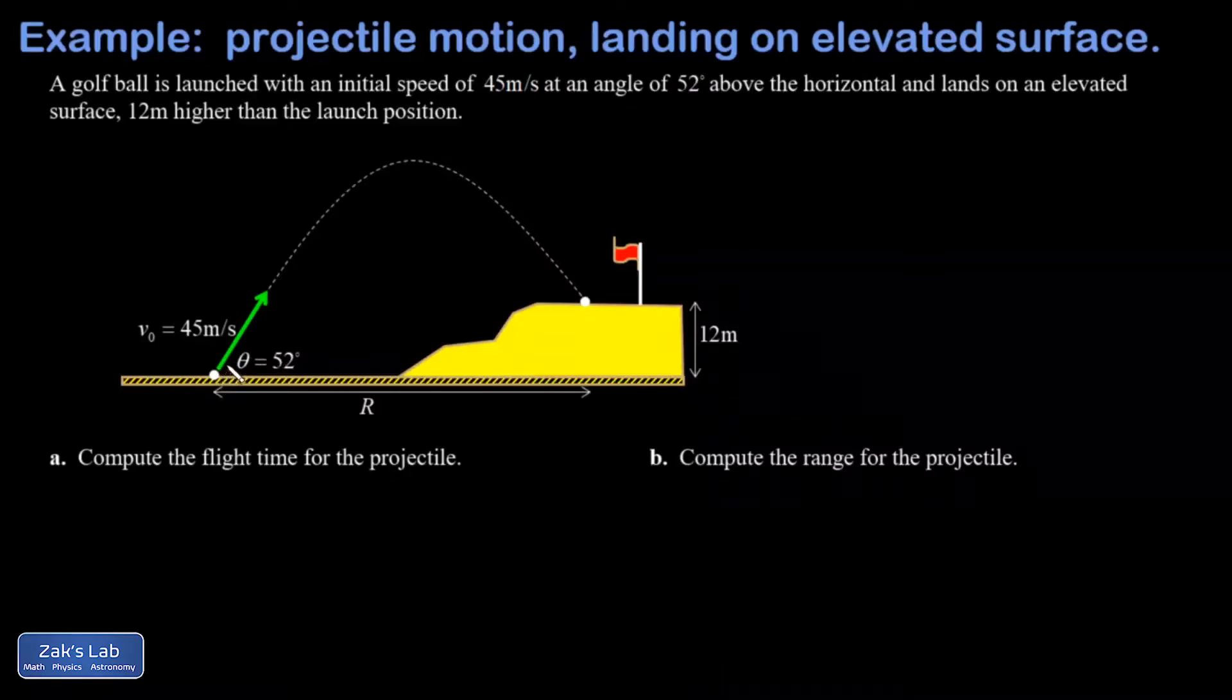In this problem we've got a golf ball being launched from ground level. I'm going to put the origin right where the ball starts, so that's the point at which x and y are both equal to zero. I'm given an initial speed on this launch of 45 meters per second and an angle of inclination of 52 degrees.